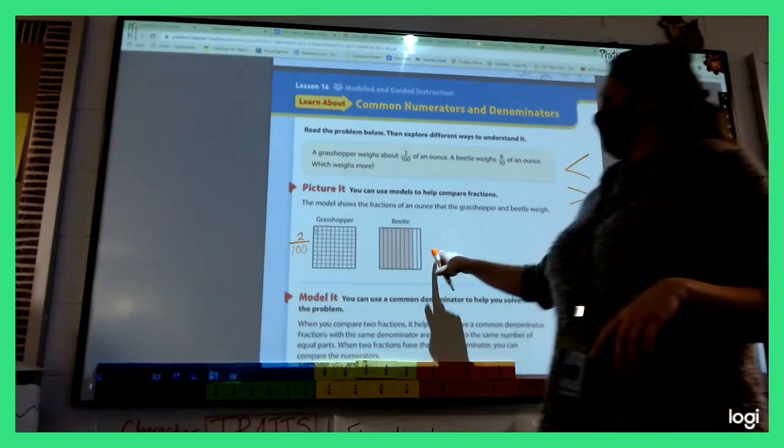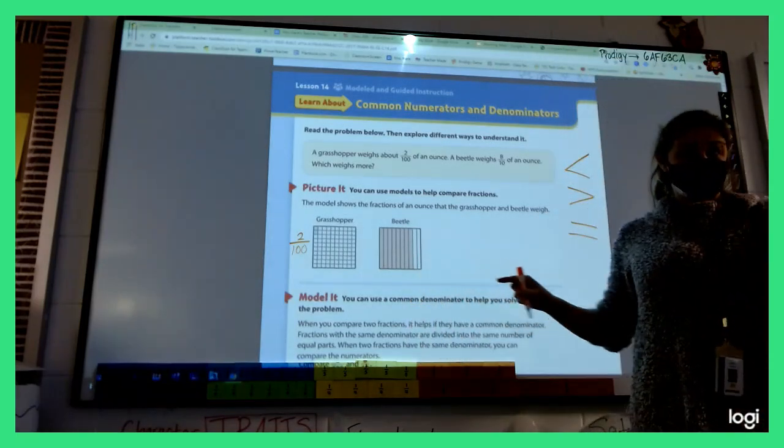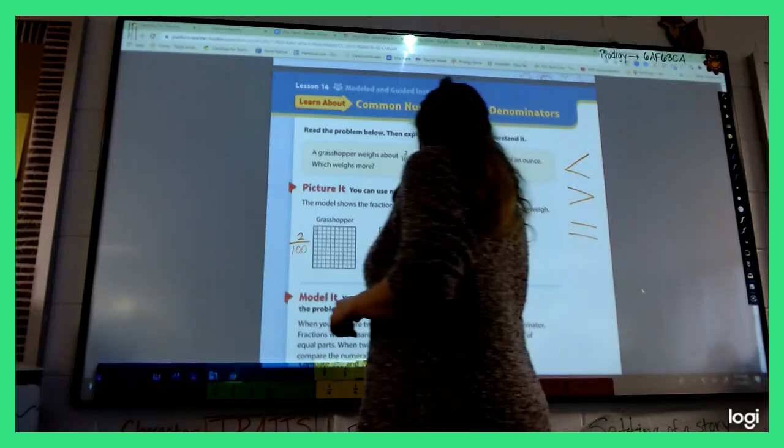Does it make sense that this grasshopper picture shows two out of a hundred? Yeah. Absolutely. I want everyone to write it next to the picture. Two hundredths. Out of one hundred spaces, only two are shaded in. Okay, now what about beetle? What fraction can I write next to beetle? Eric? Eight tenths. Eight tenths.